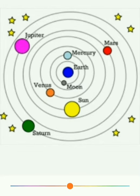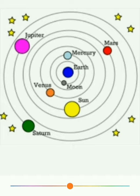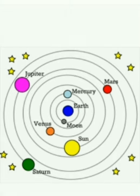See students, earth is at the center. Moon, sun and planets are orbiting around the earth. Earth is at the center means the model belongs to the geocentric model.